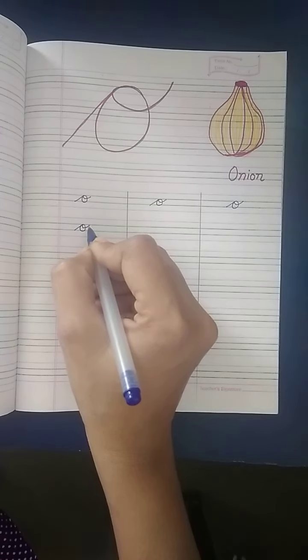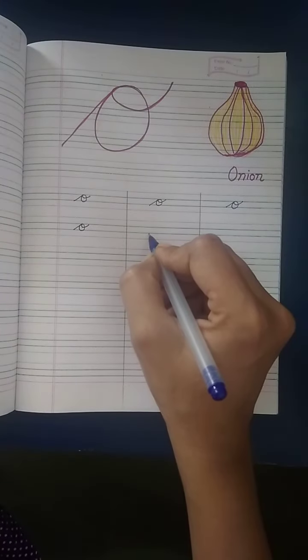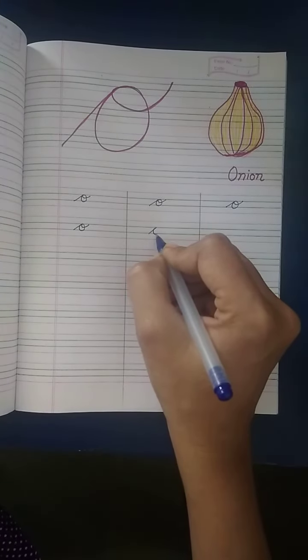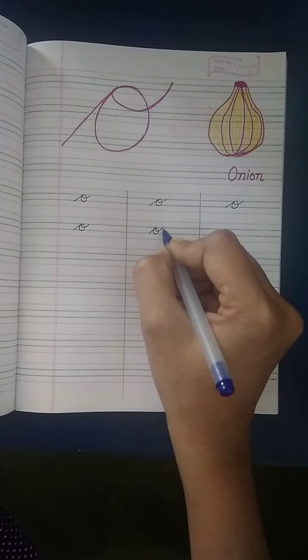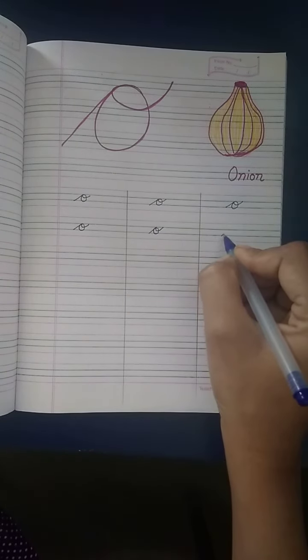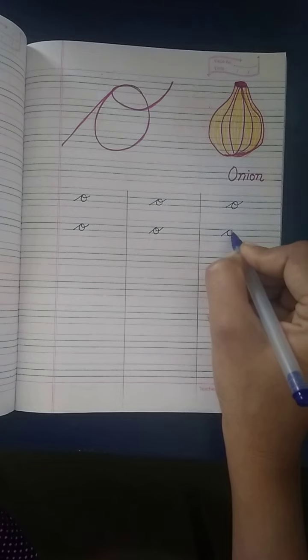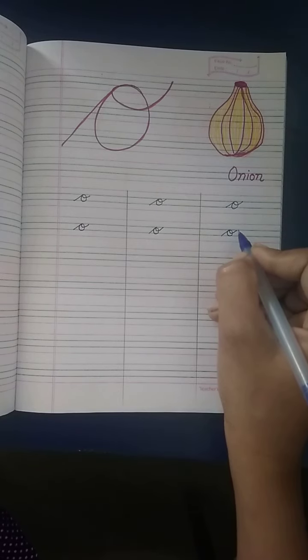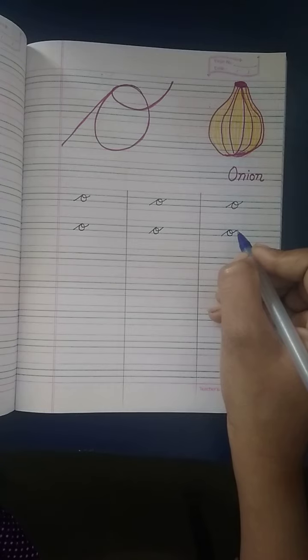It is a small cursive O. O for onion. Look. It is a small cursive O. Thank you. Bye-bye.